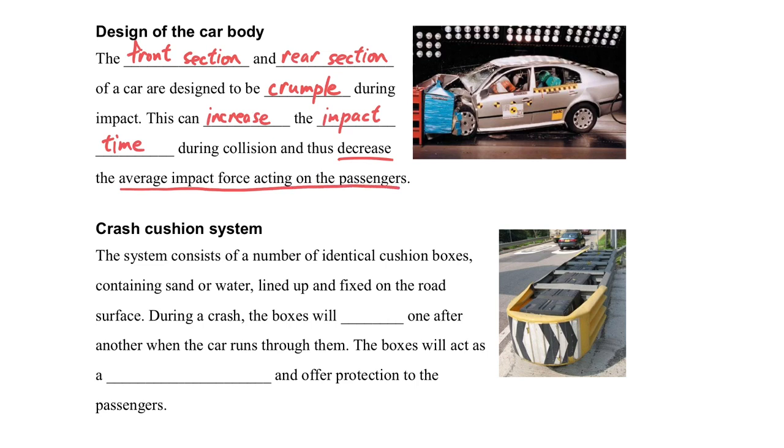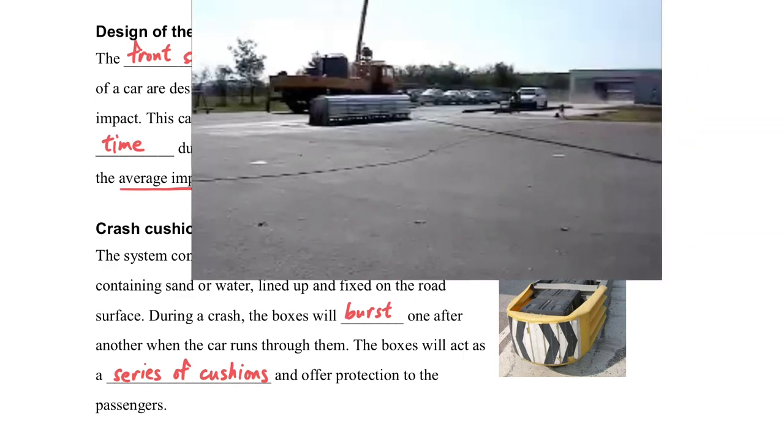This is the very standard description about the design of the car, of the seat belt and different safety measures. Here is the crash cushion box. It is also designed so that the box can be burst when there is impact, so the boxes will act as a series of cushions in order to offer protection to the passengers.